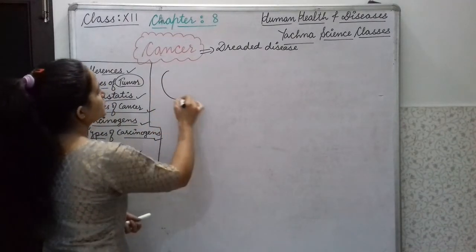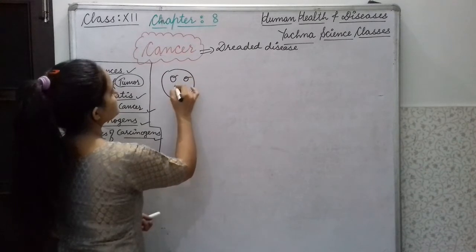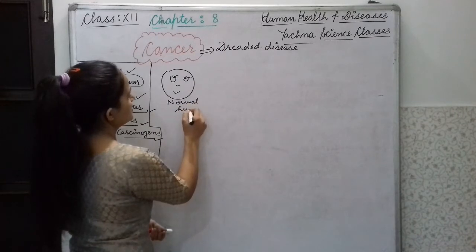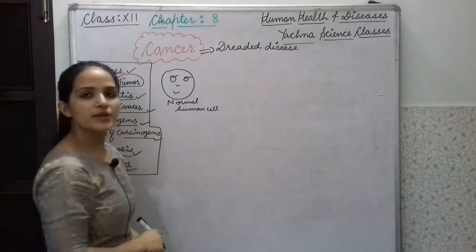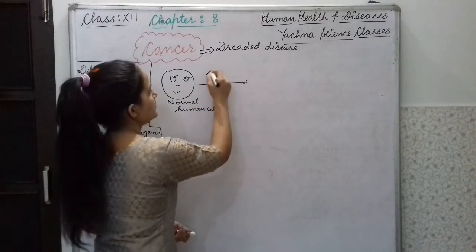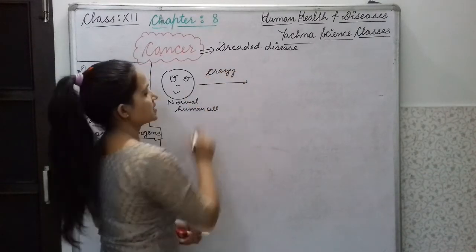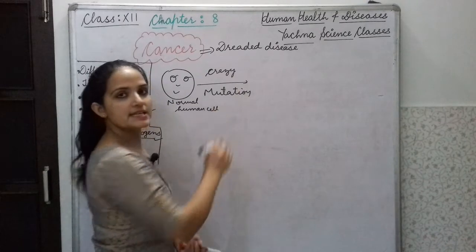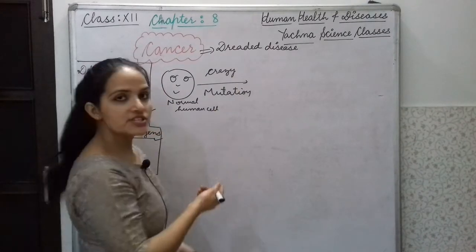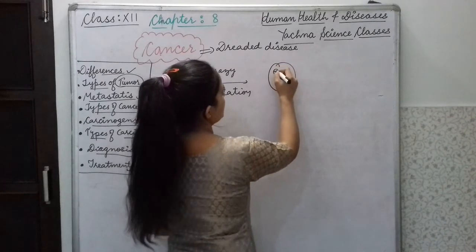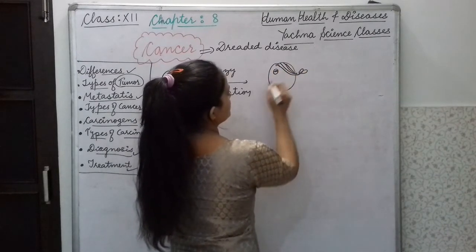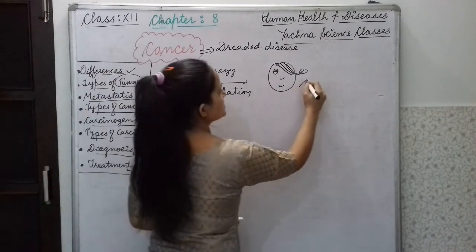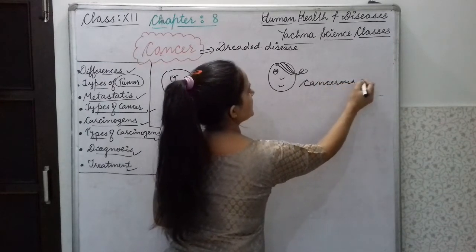If we talk about normal human cells, what happens is that the cell becomes a cancerous cell. Normal human cells undergo a mutation — some sudden changes occur in DNA — due to which the cell becomes a cancerous cell.